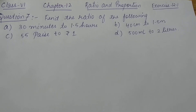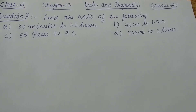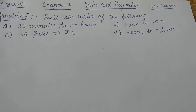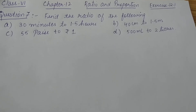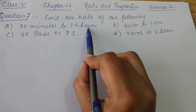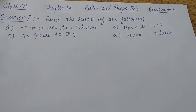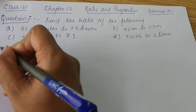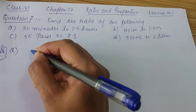Let's start question number 7 of exercise 12.1. The question is to find the ratio of the following. Part A is 30 minutes to 1.5 hours. The two quantities can be compared only if they are in the same units, but here the units are different, so first of all we will convert them into the same units.